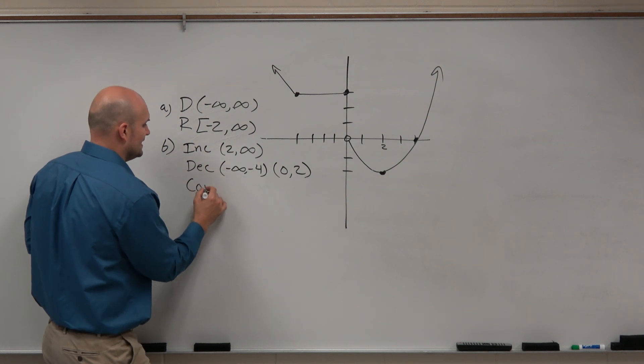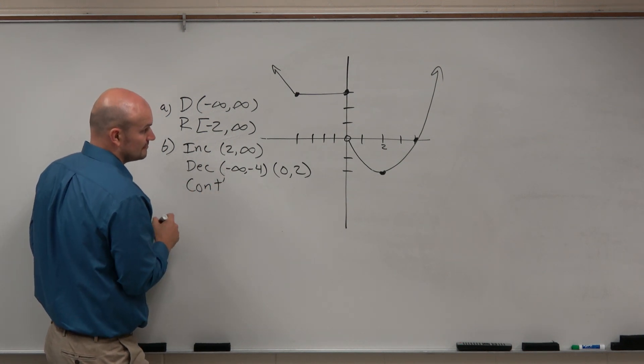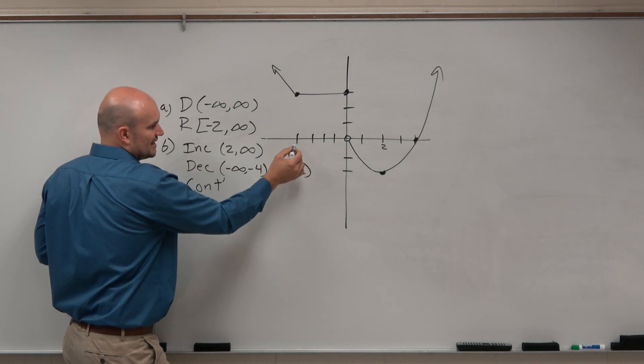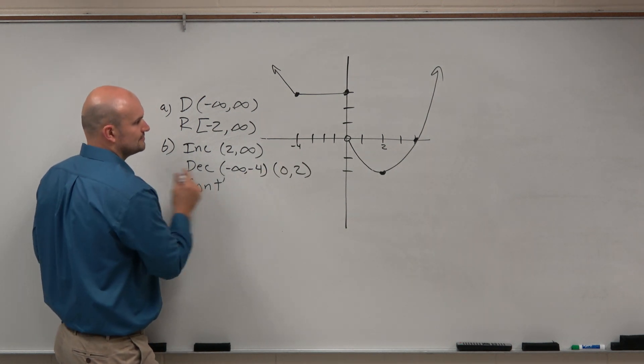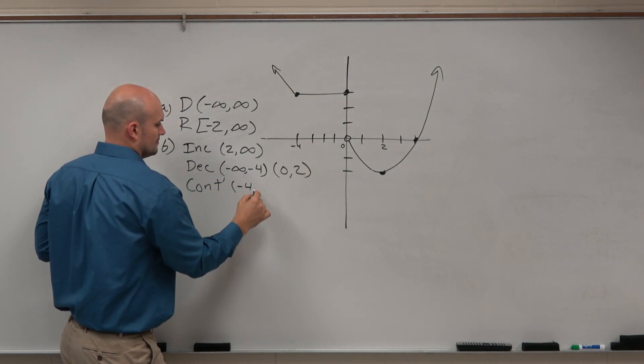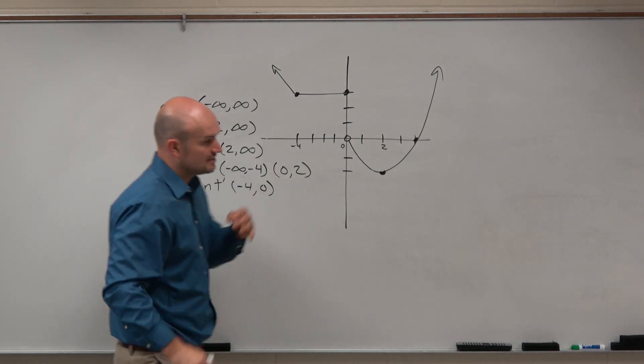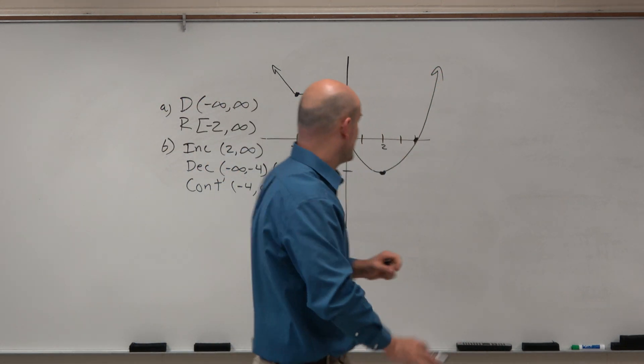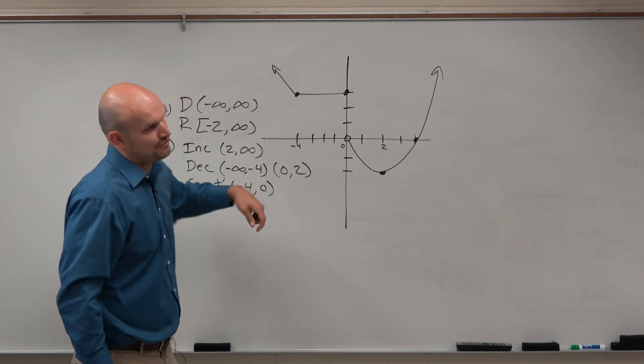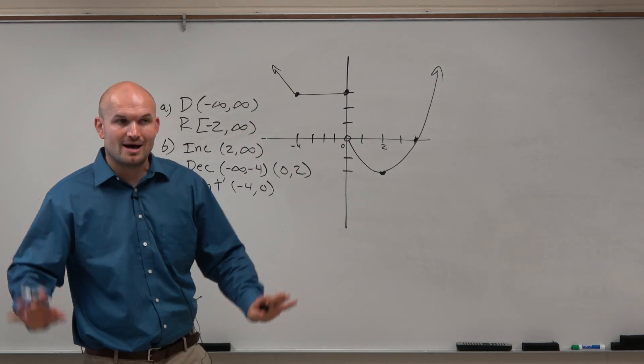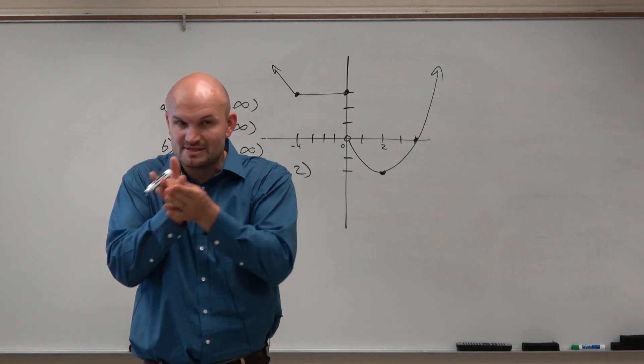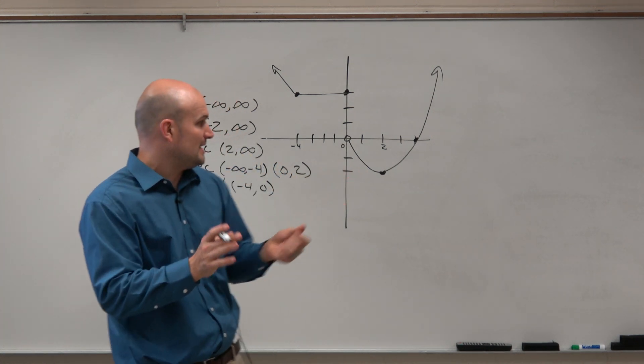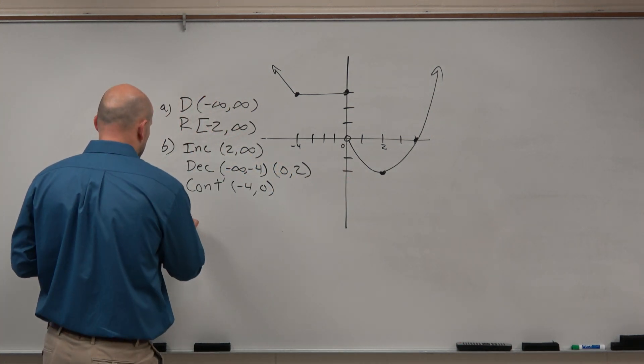And then we can say that it is constant from, let's see, what is this, negative 4 to 0. So again, guys, a lot of your brains automatically are going to want to start talking about y values. Right? You're going to say, oh, it's constant at 3. No. That's the y. You've got to describe this in terms of x values, reading it like a book from left to right.